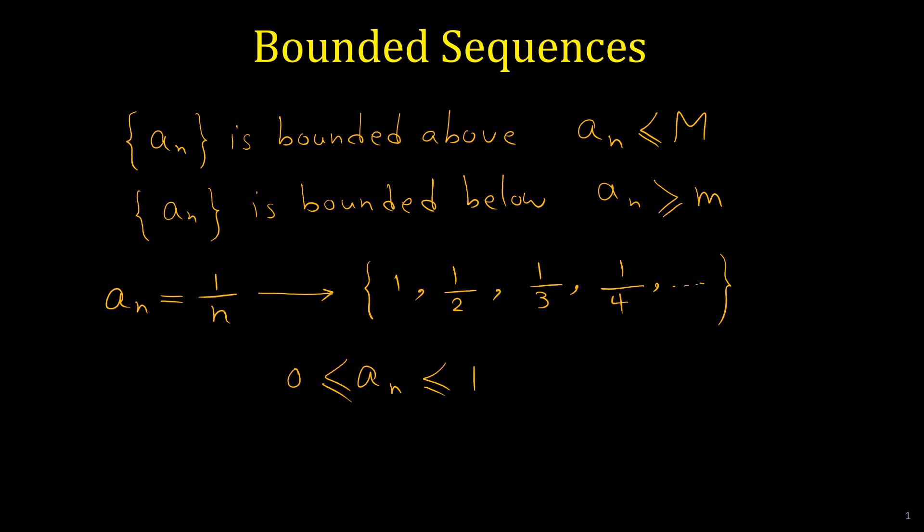All the elements are greater than 0 — all elements are positive — and all elements of this sequence are also less than 1. So this is a bounded sequence.